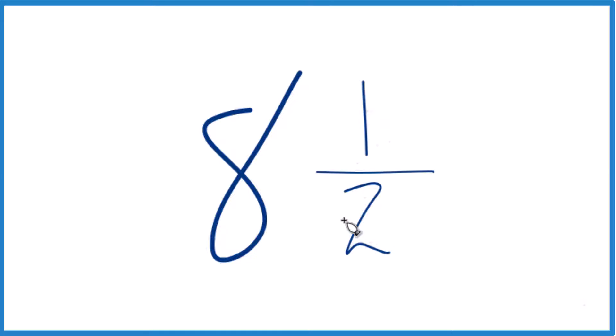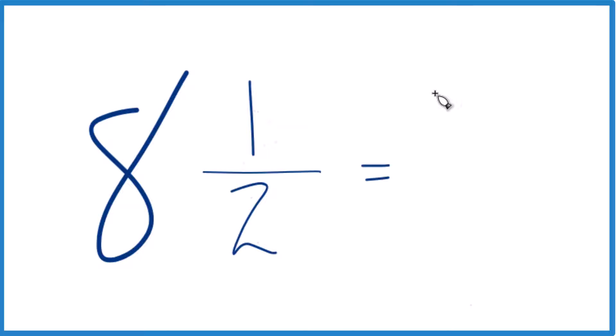And then you add 1. So 8 times 2 is 16, plus 1, that equals 17. And then we just bring the denominator here, the 2, across, and that's it.